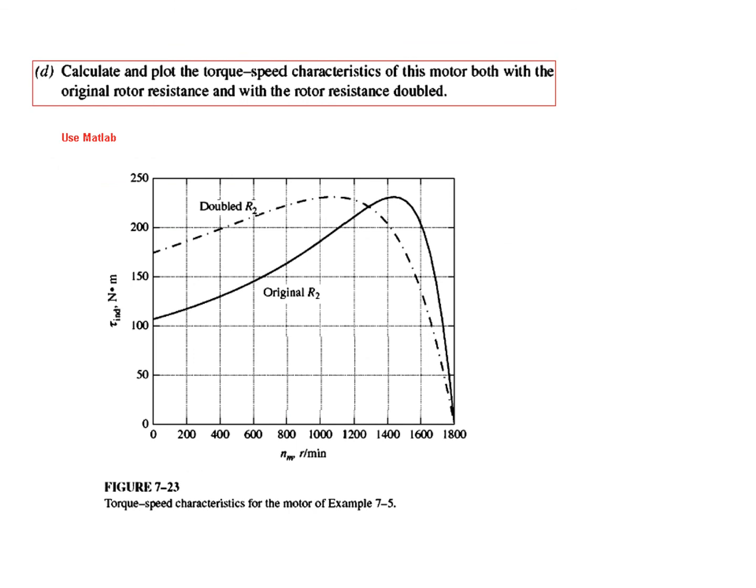Finally, the question was to calculate and plot the torque-speed characteristics. For that you have to use MATLAB, and the program is given in the book. After you run it through MATLAB, these are the two graphs that you get. The maximum torque of 232 when R is the original value occurs at about 144 speed. The starting torque was 108, so from the graph the starting torque when speed is zero is about 108.